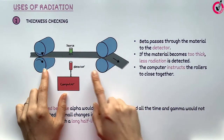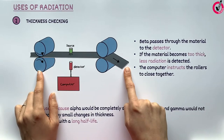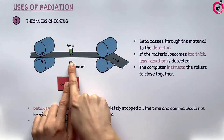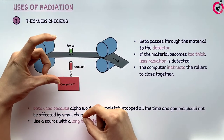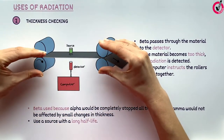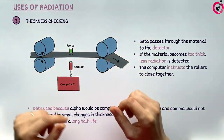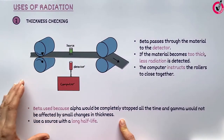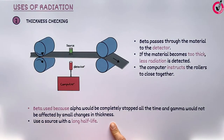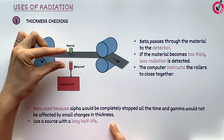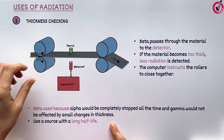We can use radiation to check the thickness of a metal that's being made. Radiation is placed on one side of the sheet of metal as it's being rolled out, and a detector is placed on the other side. If the metal gets too thick, less radiation is detected, so a computer tells the rollers to close together and roll the material thinner. Beta is used as alpha would be completely stopped all the time, and gamma would not be affected at all no matter what thickness. We would use a source with a long half-life so that the activity stays high, and so we know any change is due to the thickness of the material and not the activity of the source declining.